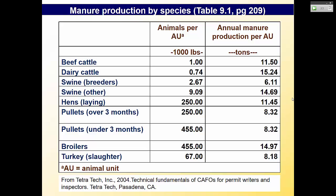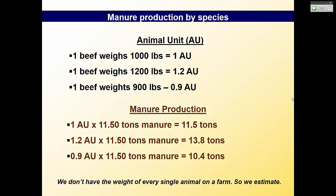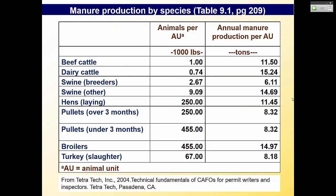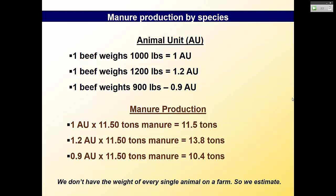When writing nutrient management plans, you're projecting manure production for the next year or two. At the end of the year, farmers report what they actually did in the Annual Implementation Report. If one beef cow weighs 1,000 pounds, that's one animal unit. If it weighs 1,200 pounds, it's 1.2 animal units. Every one animal unit of beef cattle produces 11.5 tons of manure. You multiply the animal units by the amount of manure produced per animal unit to get the total.